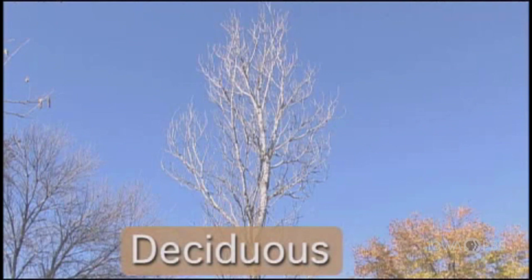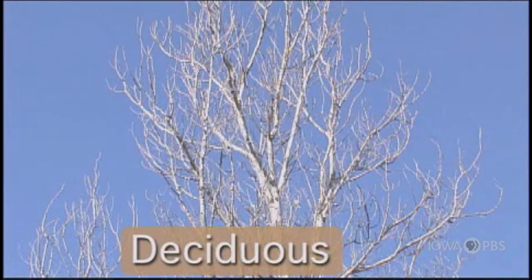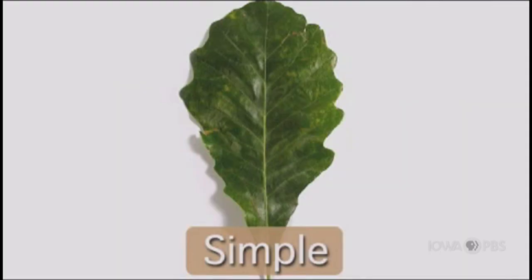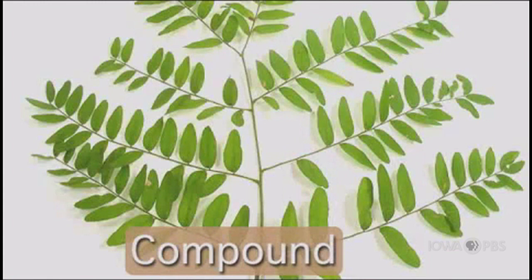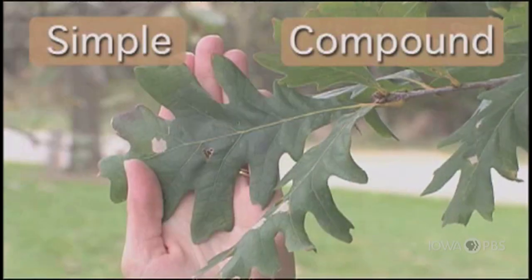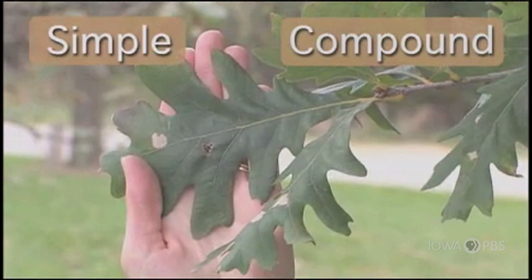Trees that have these kinds of leaves are also called deciduous trees. That means they lose their leaves every year. Now that we know this tree has broad, flat leaves, the next question in the dichotomous key is: does this tree have simple or compound leaves? This is a simple leaf with one blade. This leaf is a compound leaf with leaflets. So is our tree simple or compound? It is simple.